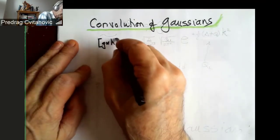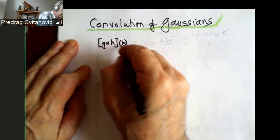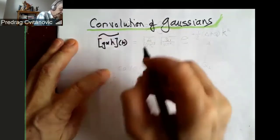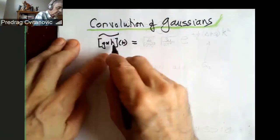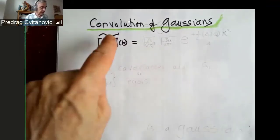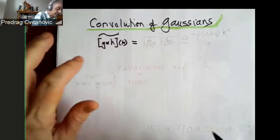The convolution said, if I have two things, it's a product of what they are. If they happen to be Gaussians, I just computed them.